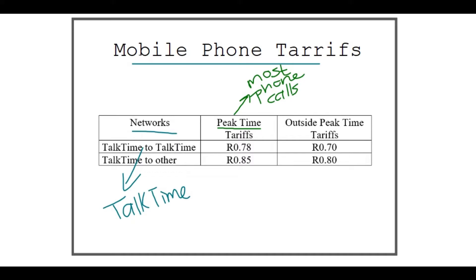We can also note that Talk Time to Talk Time — so if you're phoning from one network and your friend also has Talk Time — it's cheaper than when you're phoning from Talk Time to another network. Why is that? Because they want you and your friends and everyone else to subscribe to that network.